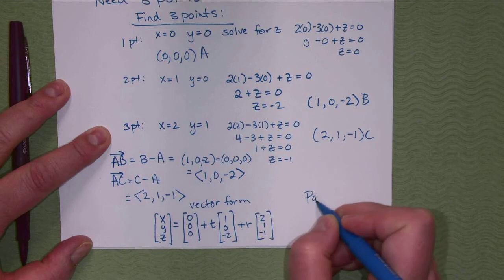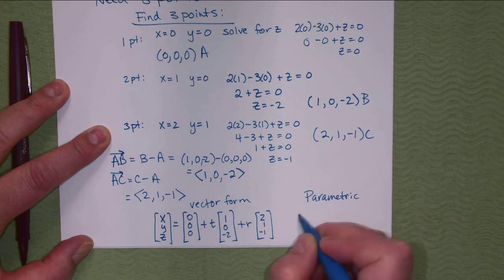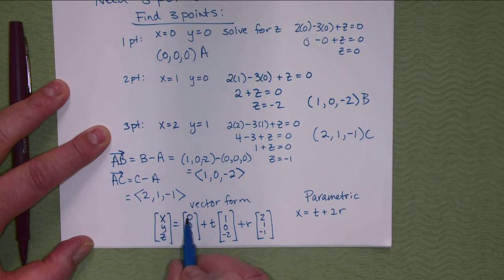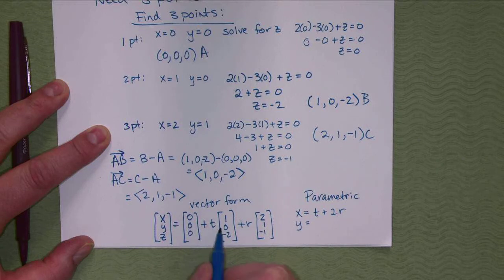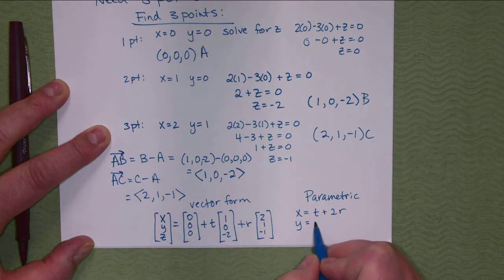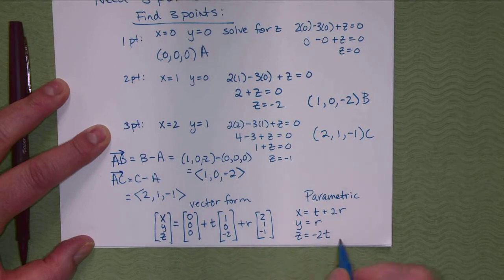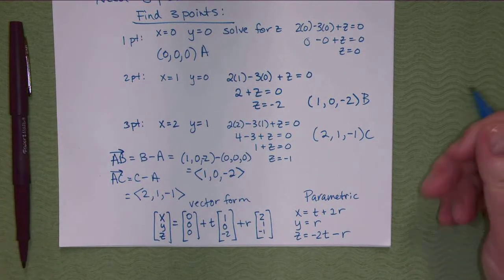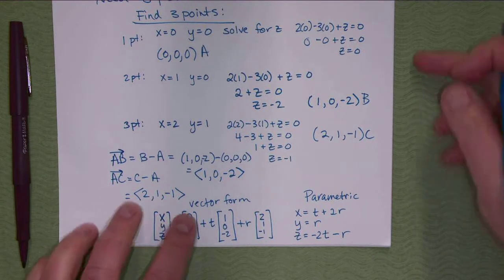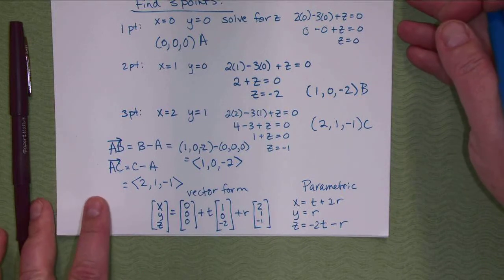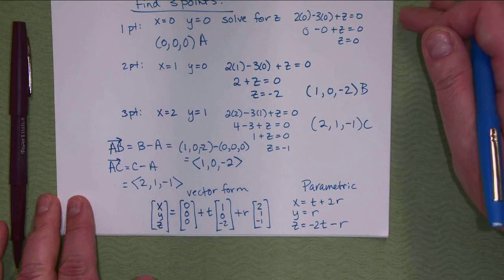And what's parametric form from that? X equals zero plus one·t plus two·r; Y equals zero plus zero·t plus one·r; Z equals zero minus two·t minus one·r. They didn't ask for parametric form here, but we use it a lot in later sections so it's worthwhile to write it out.